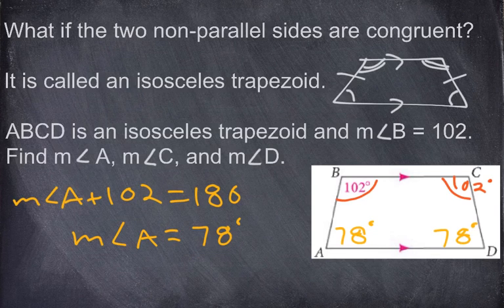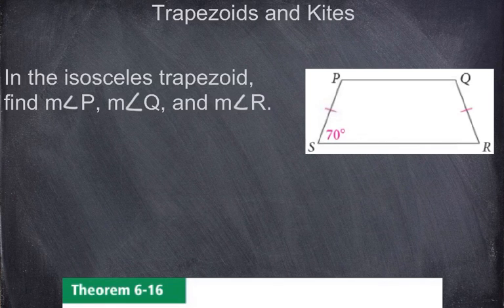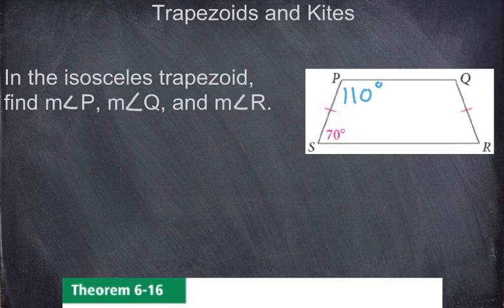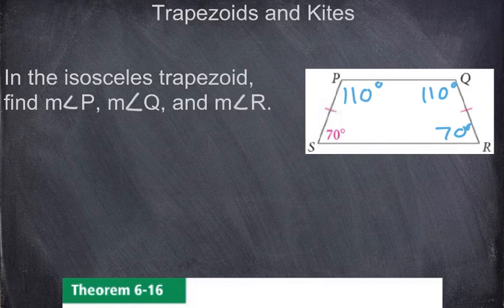Let's move on to a very similar problem. We need to find angles P, Q, and R. For angle P, we subtract from 180: 180 minus 70 gives us 110 degrees. Since it's an isosceles trapezoid, angle Q up here is also 110 degrees. And the bottom angle R is 70 degrees because angle R and angle S are congruent to each other. That's how we handle isosceles trapezoids with interior angles.